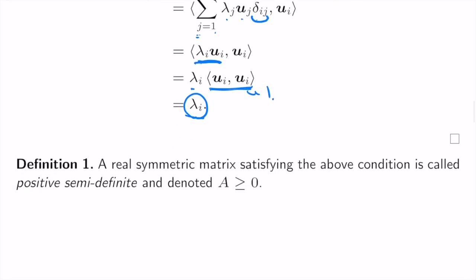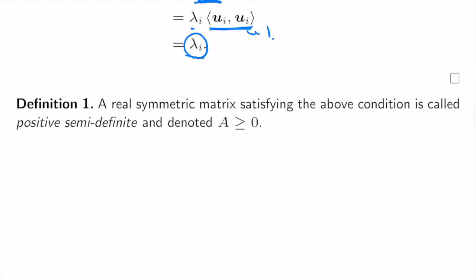Based on this theorem, we define a positive semi-definite matrix as a real symmetric matrix satisfying one of these two equivalent conditions, and we write A ≥ 0. Be careful: A is a matrix and can contain negative elements and still be positive semi-definite. It doesn't mean all elements must be positive — in fact, many elements can be negative and the matrix can still be positive semi-definite.